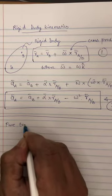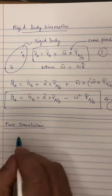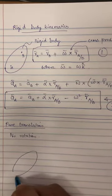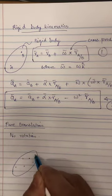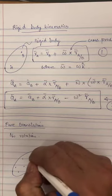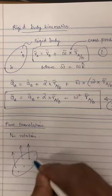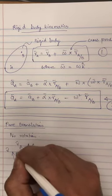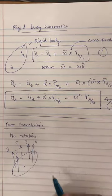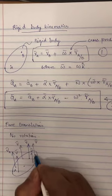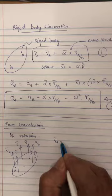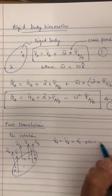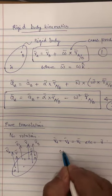The first special case is pure translation, which means no rotation. If you have a rigid body with different points on it, pure translation means every point moves with the exact same velocity V. So if this is point A, B, C, then V_A equals V_B equals V_C, which basically means omega equals zero.